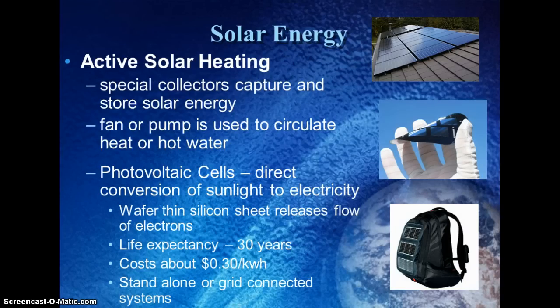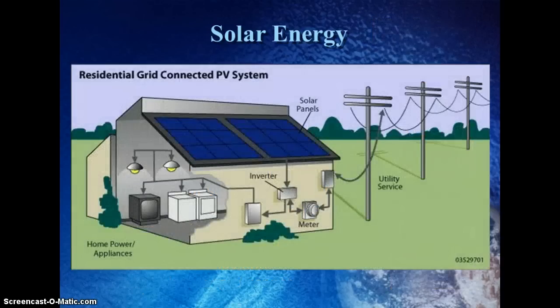You can have a standalone system or a grid-connected system. Grid-connected means that during the daytime, if you aren't home but your panels are collecting electricity, your meter would actually turn backwards because you're sending extra electricity to the power company. At night, when the sun is not shining, you use electricity from the power company instead. So at the end of the month, instead of getting a power bill, you might actually get a check.